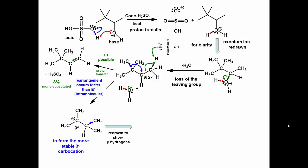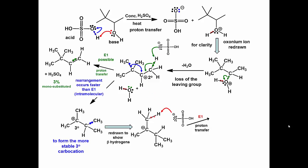Let's redraw the molecule to show the adjacent beta-hydrogens. Elimination can occur by abstracting a hydrogen atom from the adjacent methyl group to give a disubstituted alkene, or from the adjacent tertiary hydrogen to form the tetrasubstituted alkene.